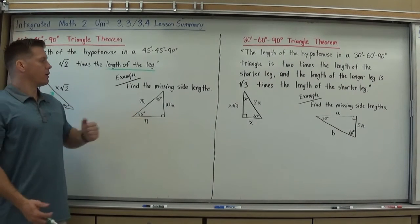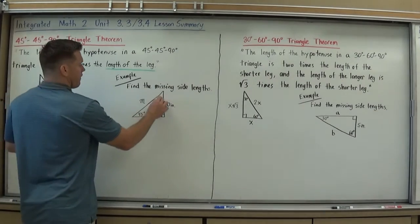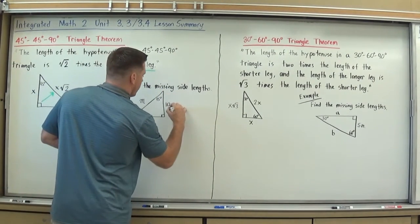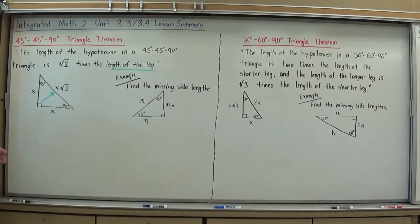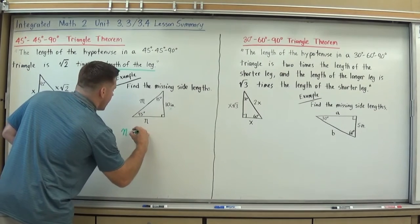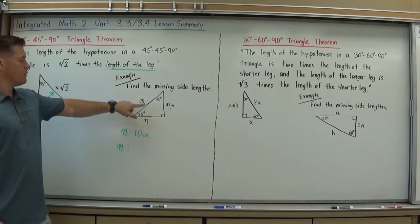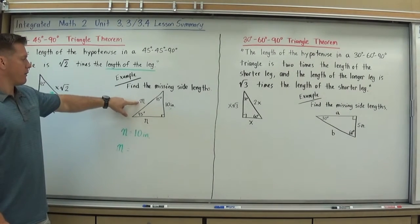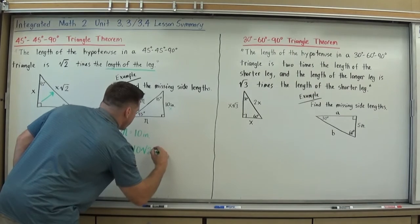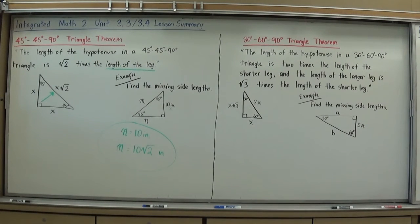Now in a problem where I'm asked to find the missing side lengths, as long as I can identify something in that spot I can find the numbers fairly quickly. Here I have a 45-45-90. My ratio is x, x, x√2. If one leg is 10, then x equals 10, so the other leg n is also 10 inches. The hypotenuse — identified by being opposite the right angle — is x√2, so with x equal to 10, it's 10√2 inches. It can really be that simple to find these missing side lengths when you memorize the ratio.